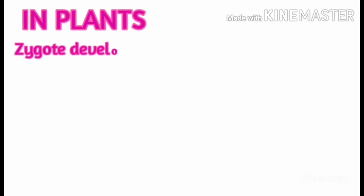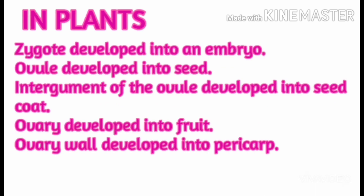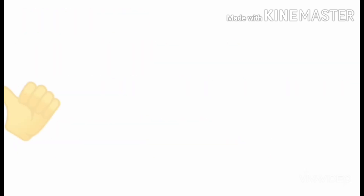In plants, the zygote develops into an embryo, the ovule develops into a seed, the integument of the ovule develops into the seed coat, and the ovary develops into the fruit. Hope you like this video, thank you.